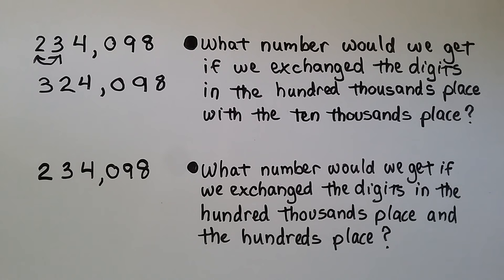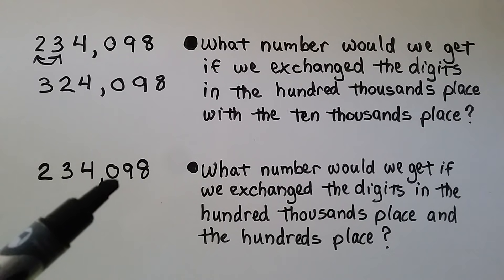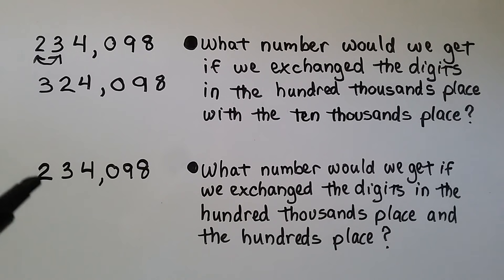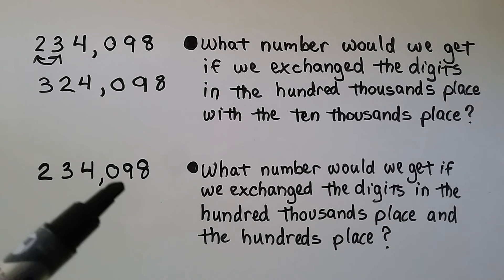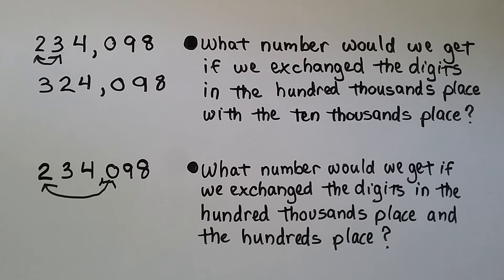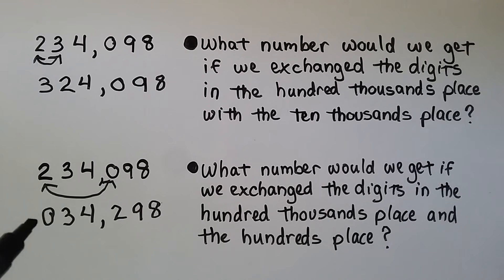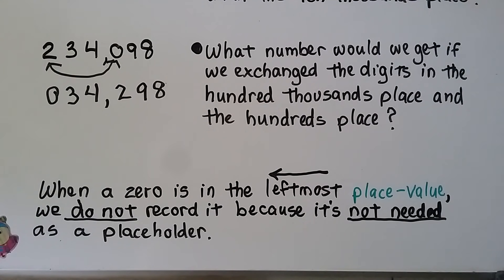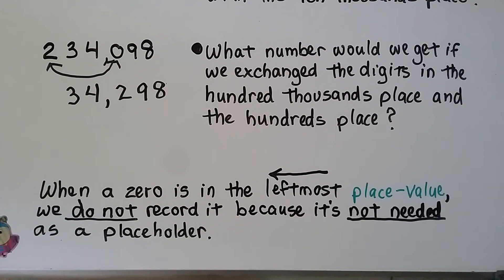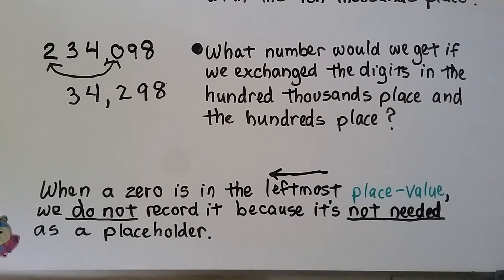Using that same number, what would we get if we exchanged the digits in the hundred thousands place and the hundreds place? We identify: ones, tens, hundreds — we have a zero in the hundreds place; one thousand, ten thousand, hundred thousand. So we're exchanging the two and the zero. The number would have a zero on the left-hand side, but when a zero is in the leftmost place value we do not record it — it's not needed as a placeholder. If zero is in the middle of the number, we keep it, but not at the front. Now we have thirty-four thousand two hundred ninety-eight.